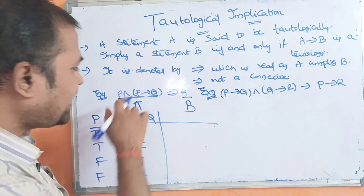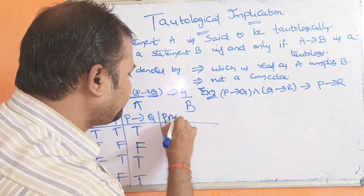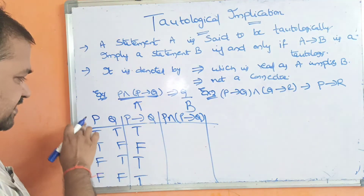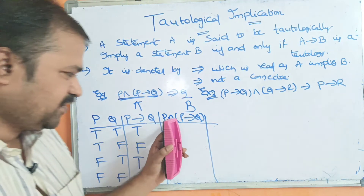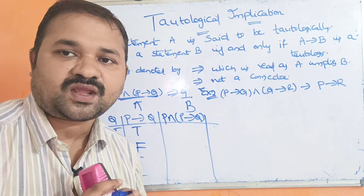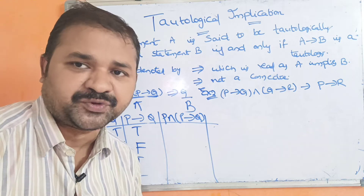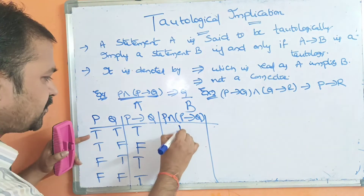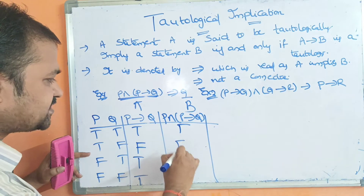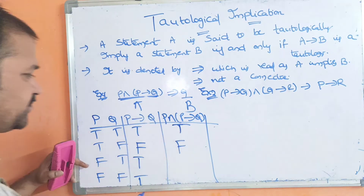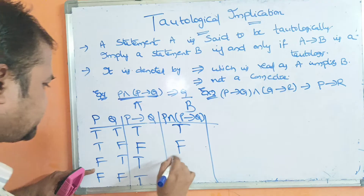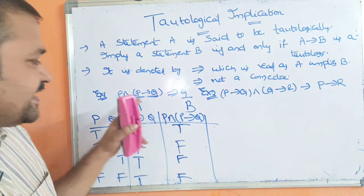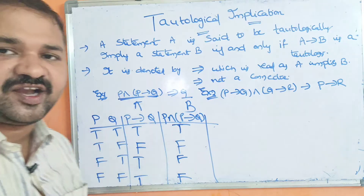Next, we compute the AND operation: P ∧ (P→Q). We perform AND on the P column and the P→Q column. When both are true the result is true, otherwise false. So: T∧T=T, T∧F=F, F∧T=F, F∧T=F. With this, the LHS (A) is calculated.